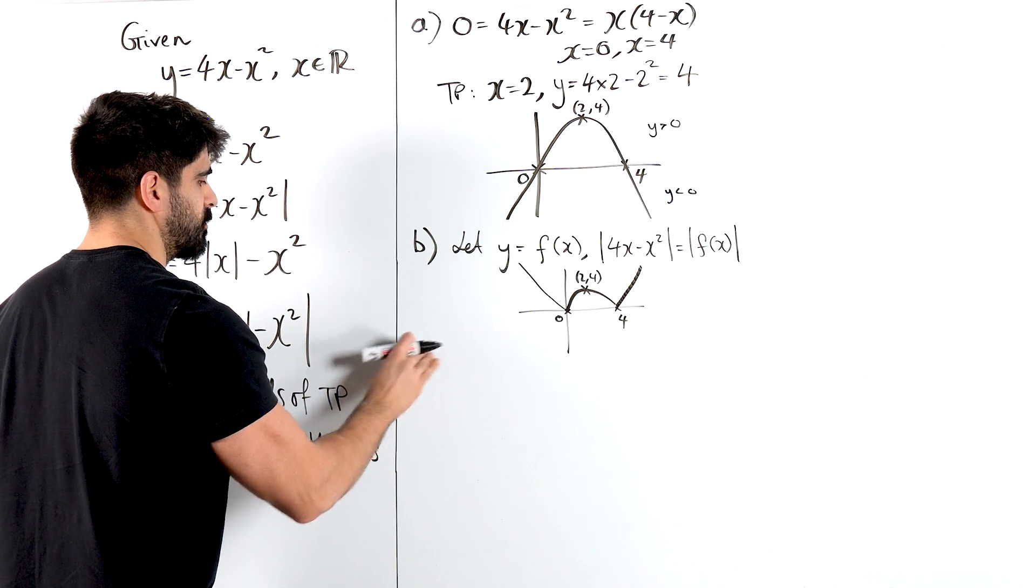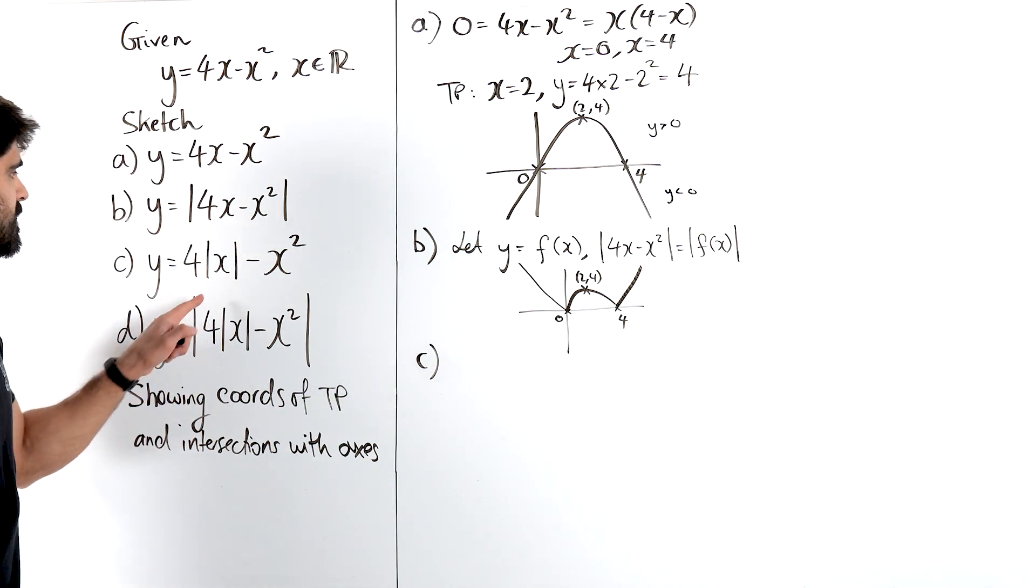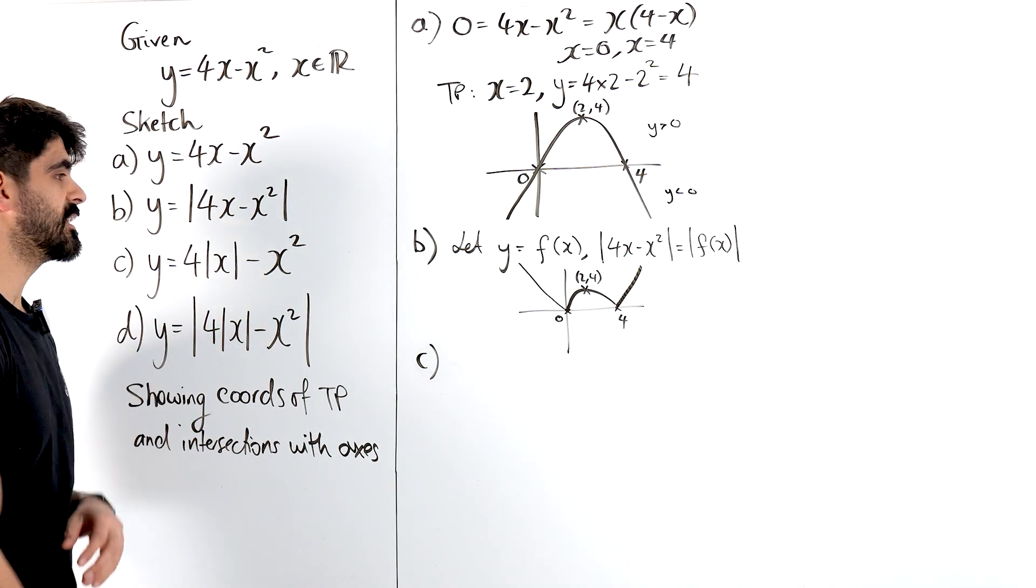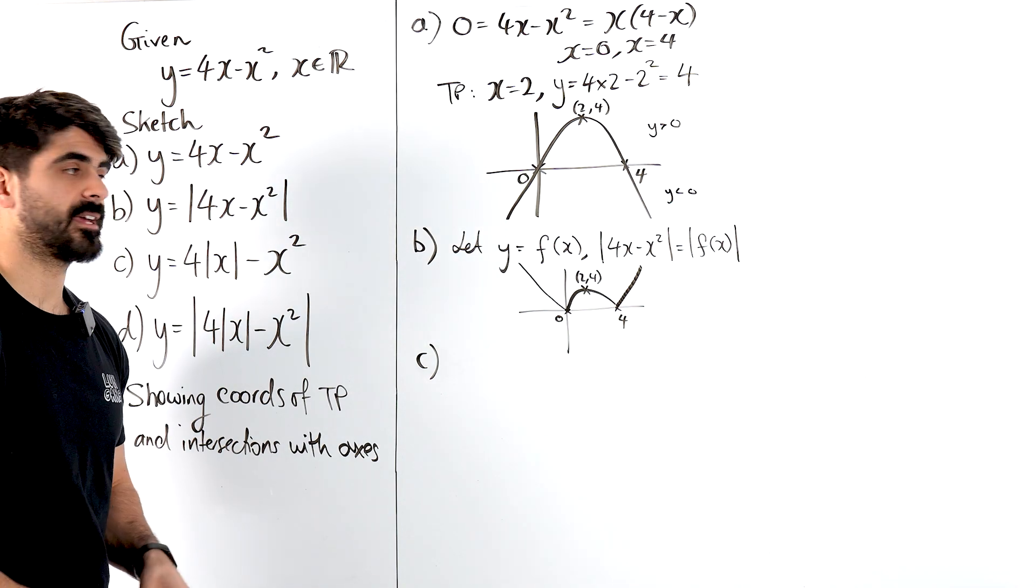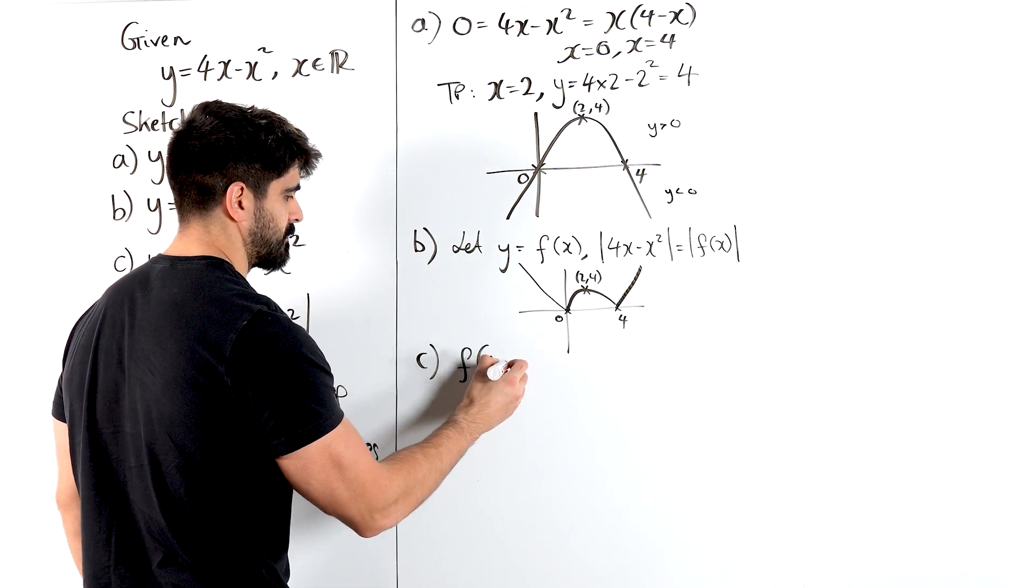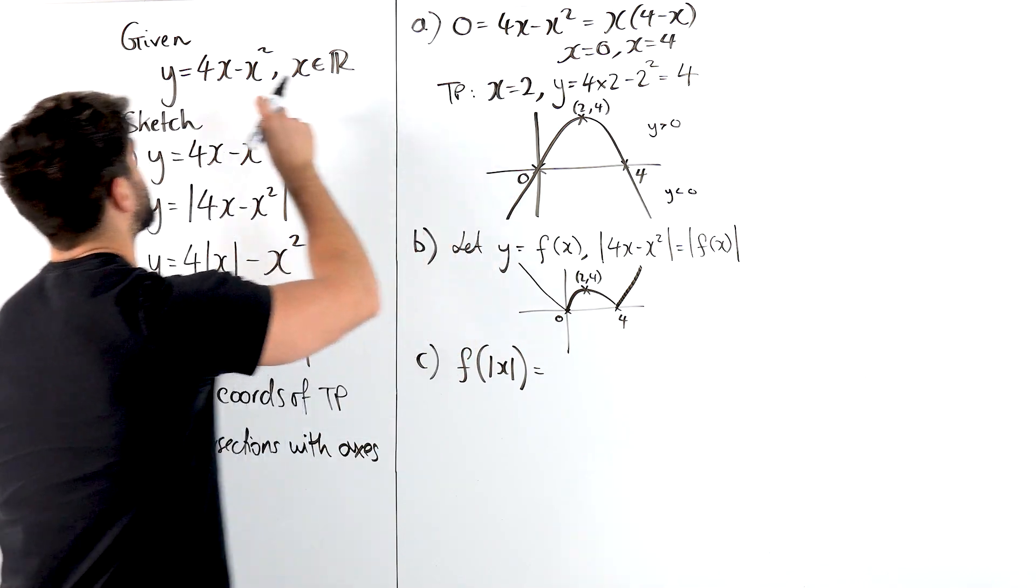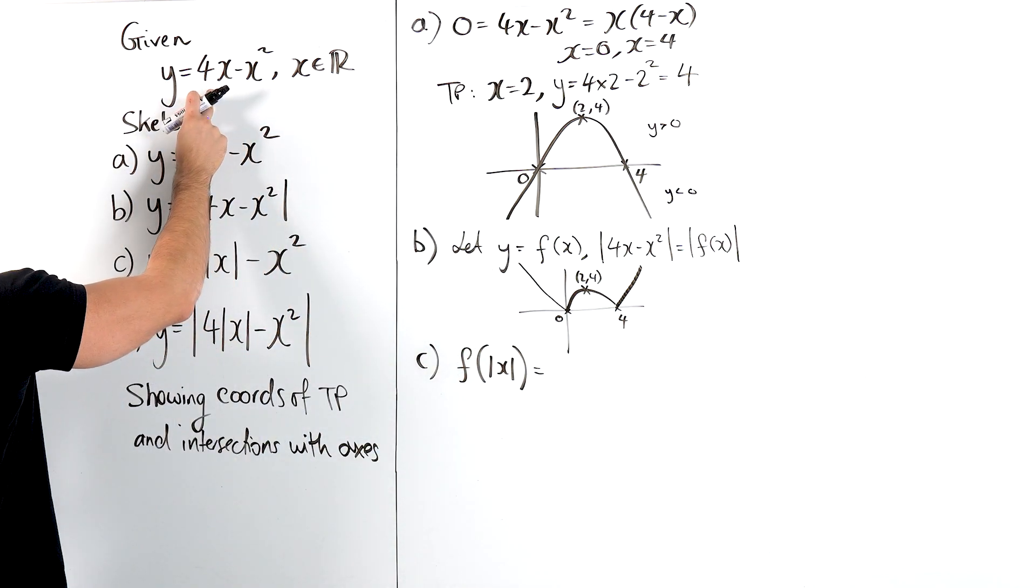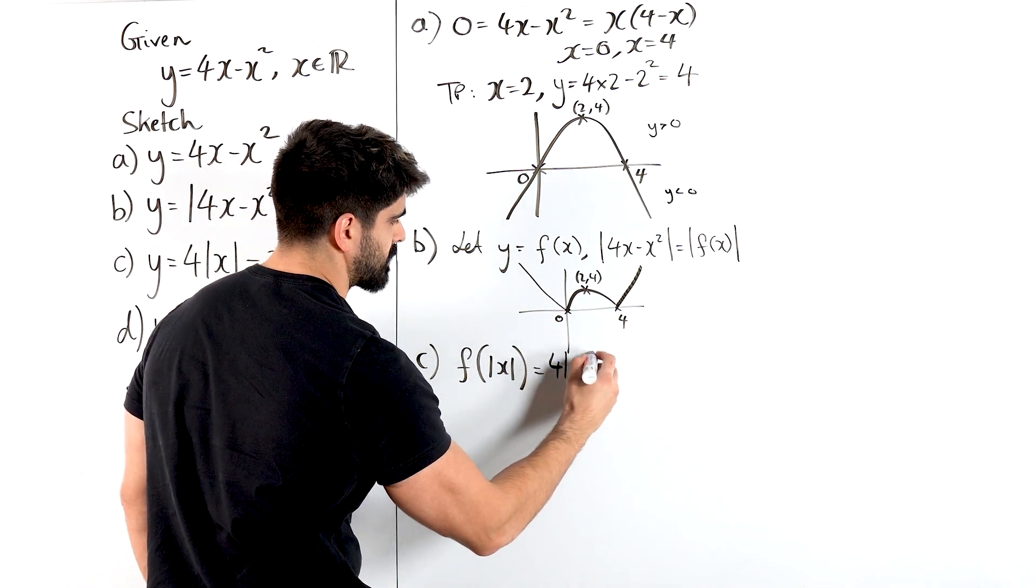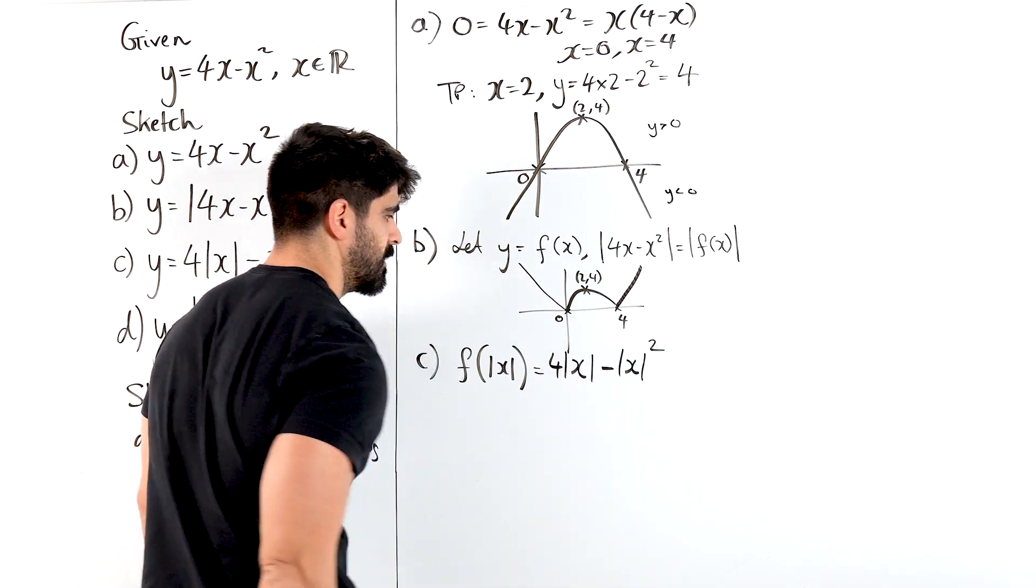Now part C is actually an interesting one because you can see that there is a modulus around the x only. Now this is actually f mod x. Now let's just take a look at what f mod x would be. So over here, where's my f of x? Here. f of mod x means x has changed to mod x. So it would look like this, 4 mod x minus mod x squared.